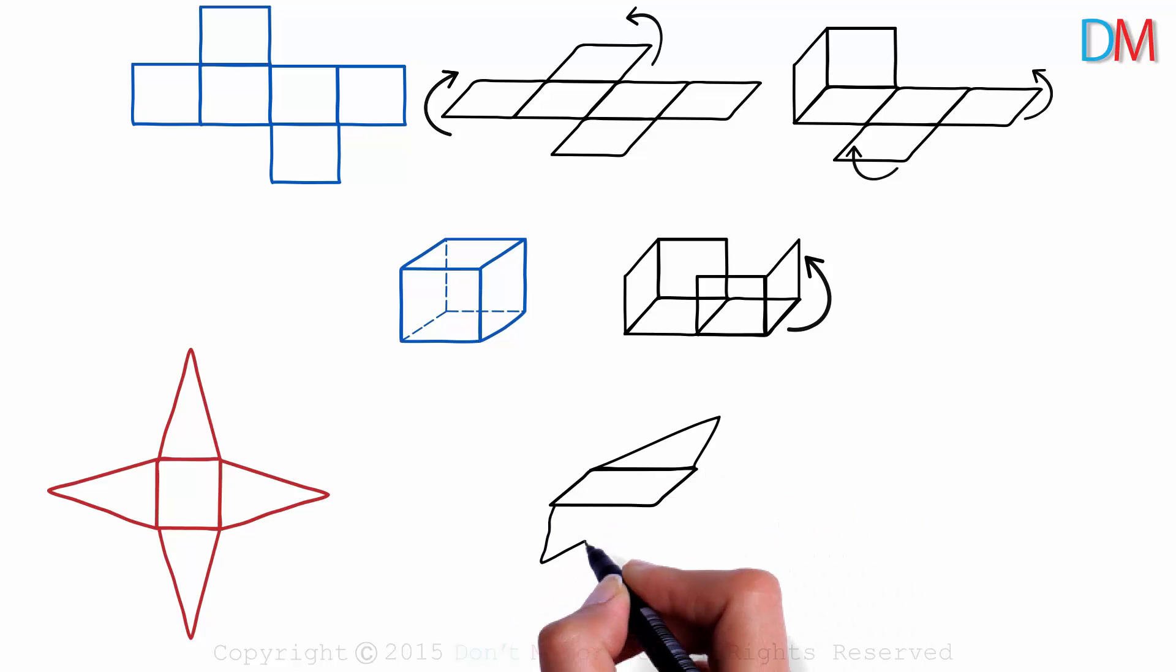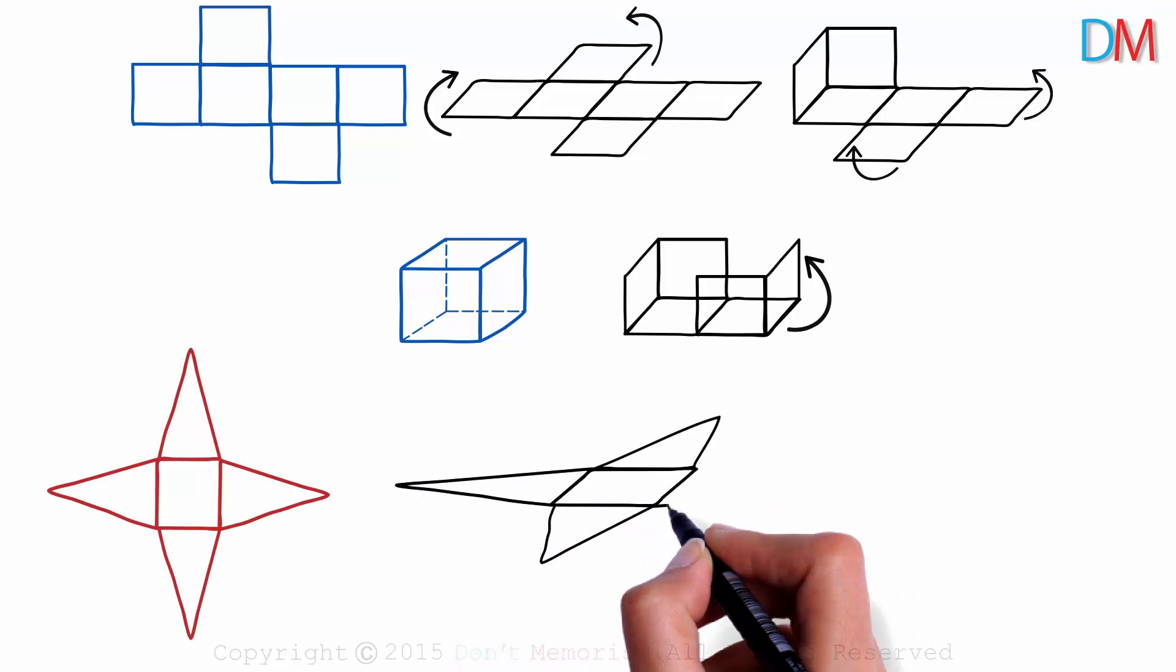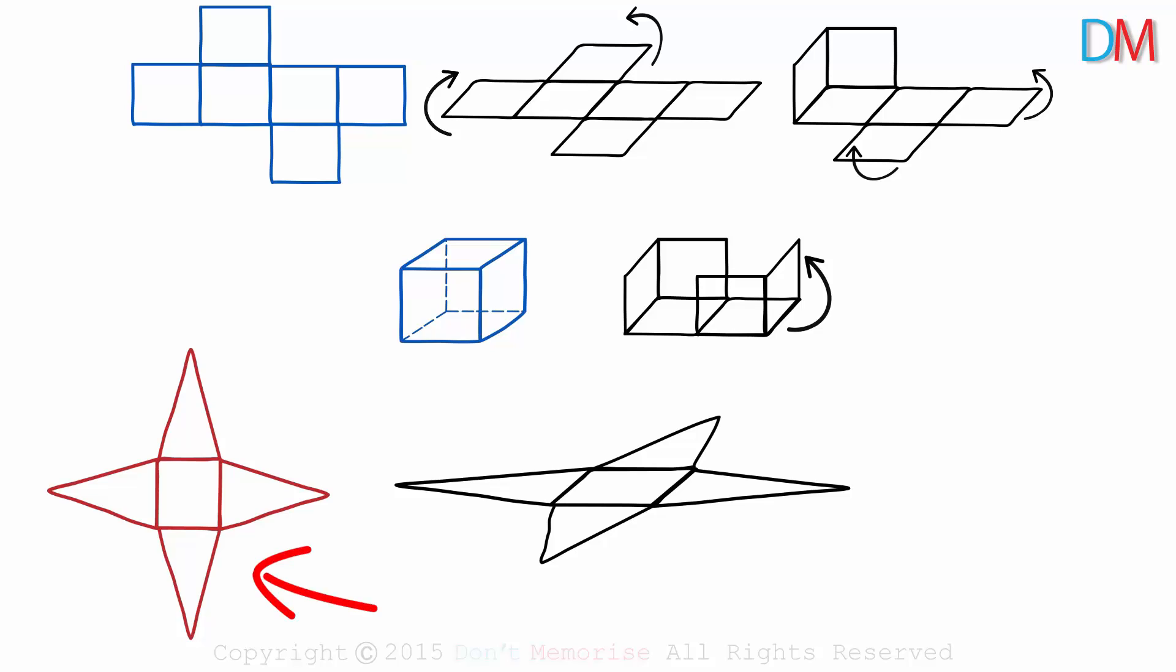These four triangles will also lie on the same plane. Triangle 1, Triangle 2, Triangle 3 and Triangle 4. We have just tilted this to make it lie on a plane. And now it becomes much easier for us to think of the solid that can be formed out of this net.